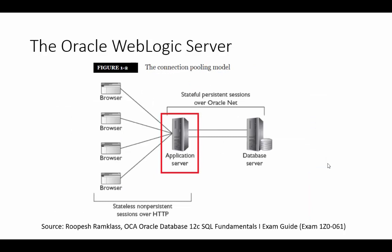In the Oracle WebLogic Server we have two main components: the application server and the database server. Both of them work together to provide information to the user. In this case, the information is available through a website which is hosted in the application server. The database is hosted in the database server, and together they work to provide information to users through the website.